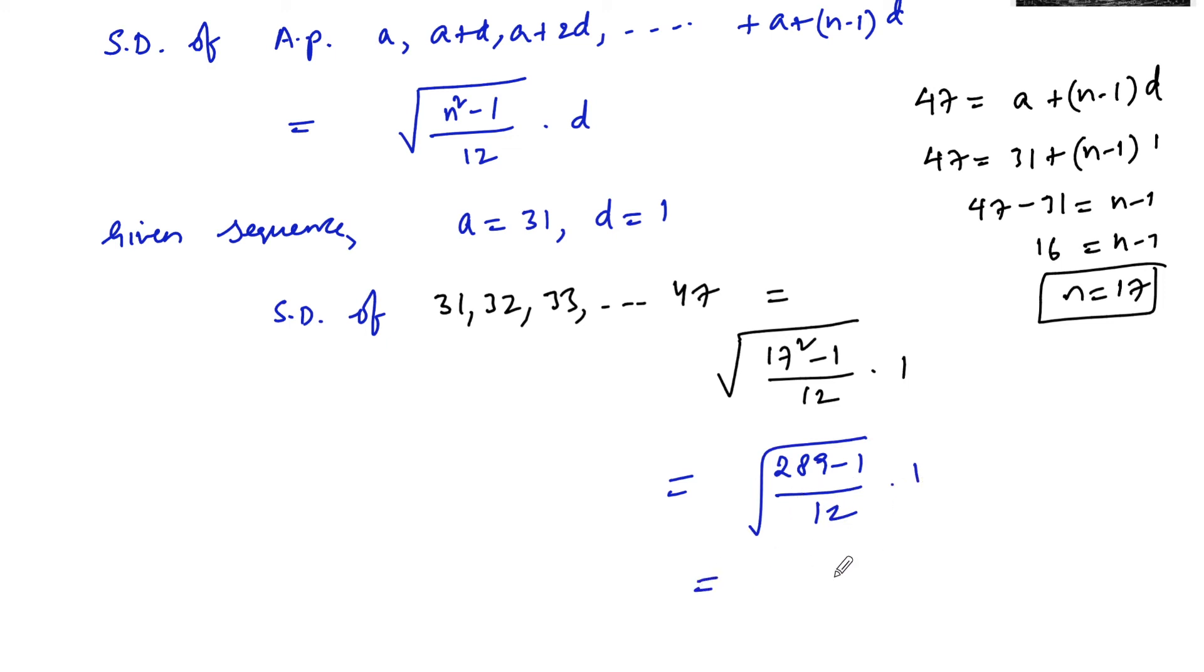289 minus 1 is 288, so 288 upon 12, square root. 12 into how many times, 12 2s and again 12 4s, square root of 24.